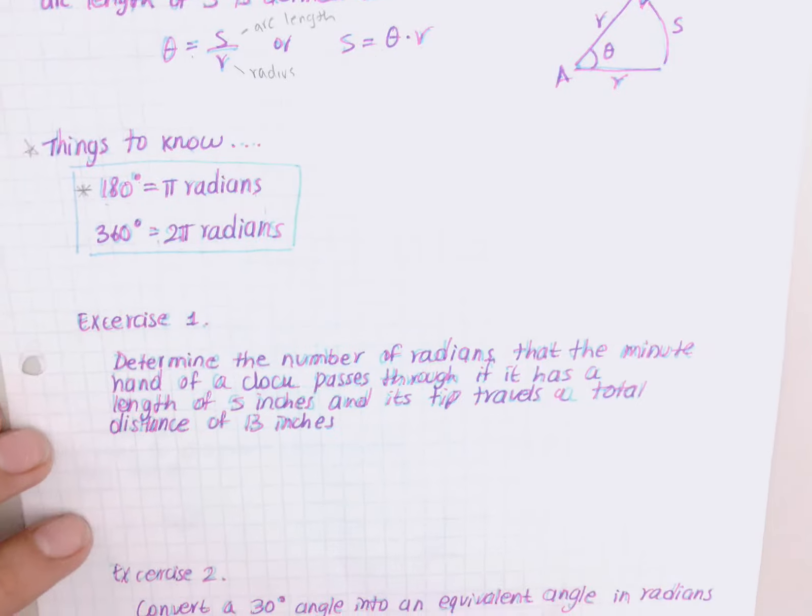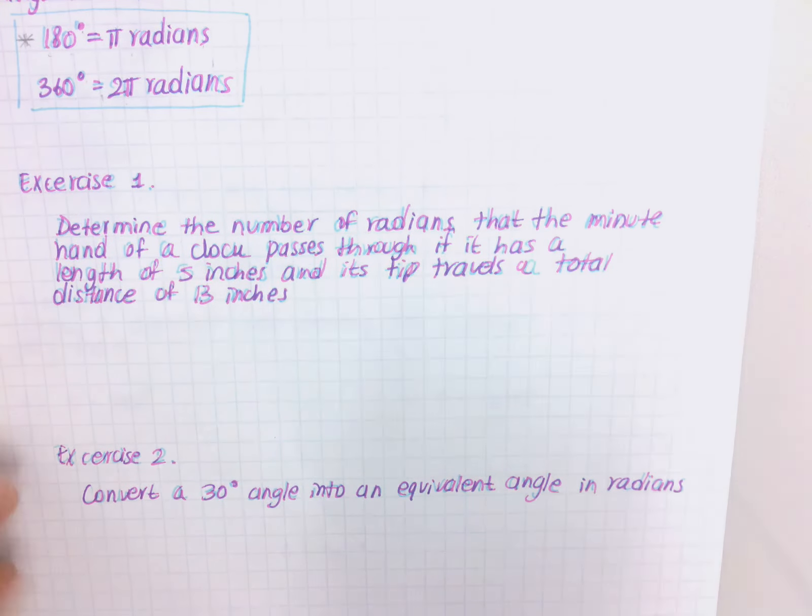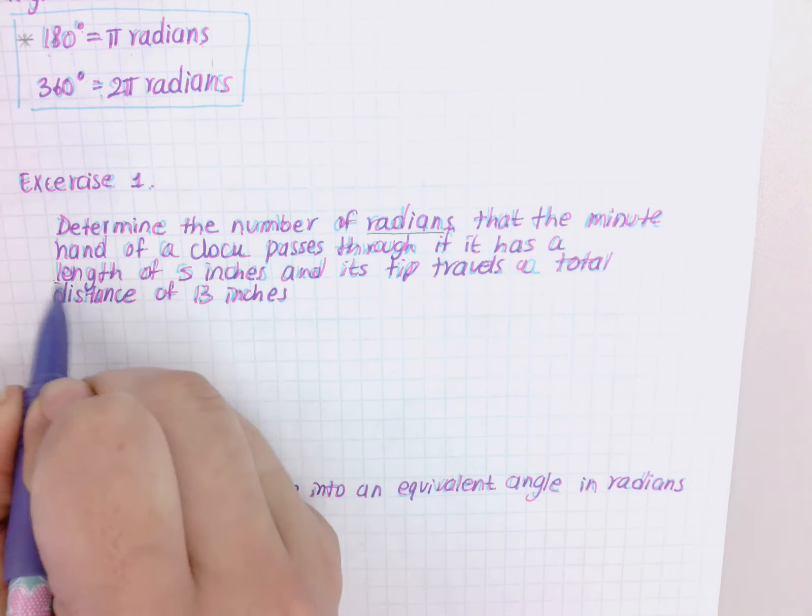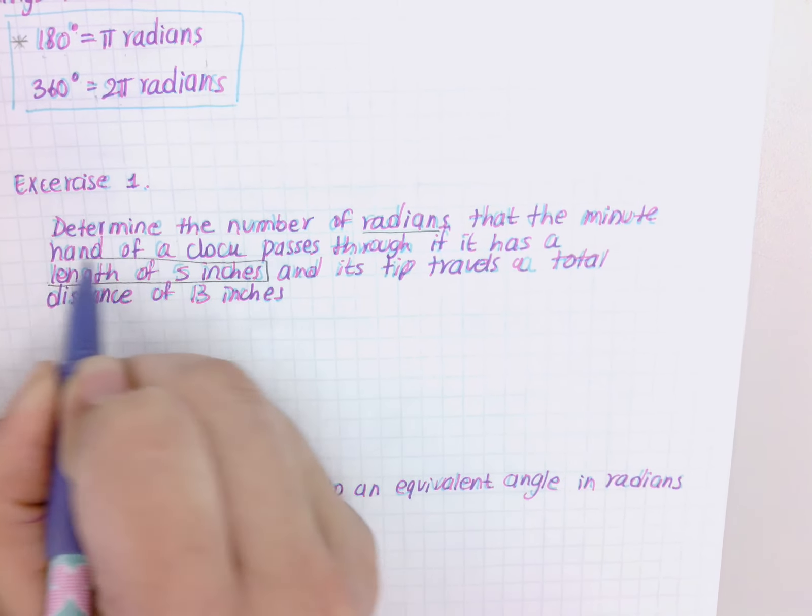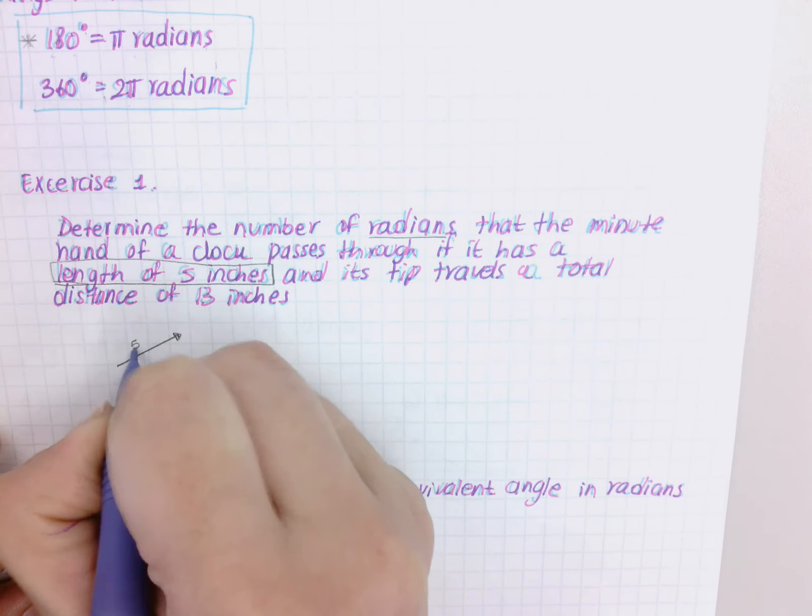All right, so exercise one: determine the number of radians that the minute hand of a clock passes through if it has a length of five inches. So it has a length of five inches - think about like a clock hand that has a length of five inches.